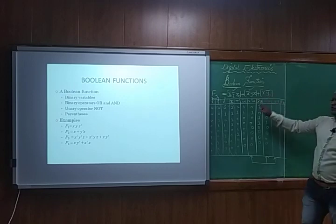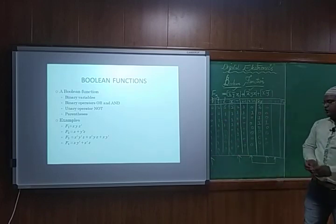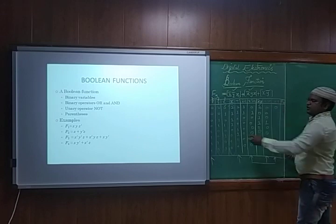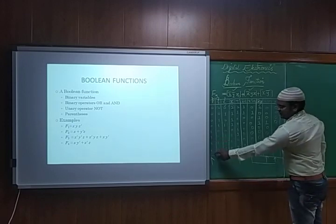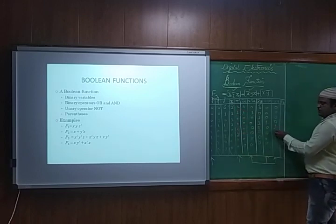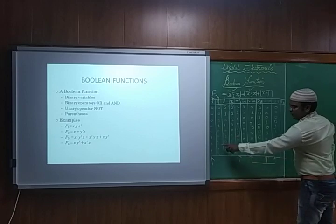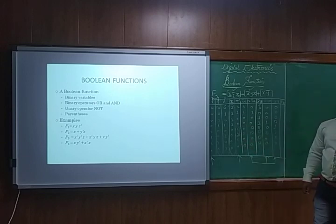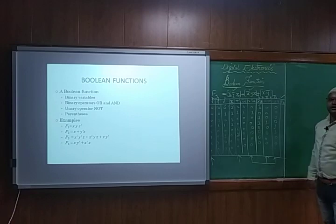Next we had x and ȳ for the third term xȳ. Since the first four x values are 0, all those products will be 0. For the last four rows where x is 1, we look at ȳ: it gives 1,1 for the next two, then 0,0. So xȳ gives 0,0,0,0,1,1,0,0 — that is 1 at minterms 4 and 5.